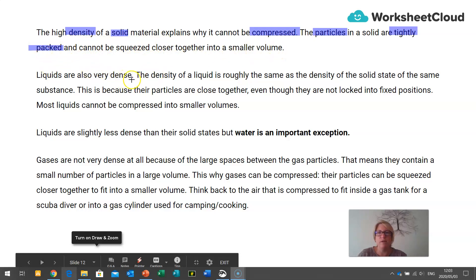Liquids are also very dense. The density of a liquid is roughly the same as the density of the solid state of the same substance. This is because the particles are close together, even though they are not locked into fixed positions. It is very important that you remember they are not locked into fixed positions. Most liquids cannot be compressed. Liquids are slightly less dense than their solid states, but water is an exception.